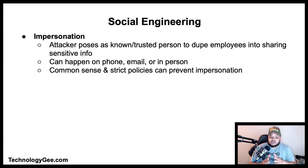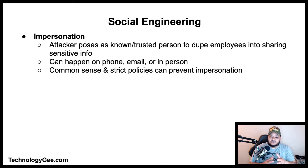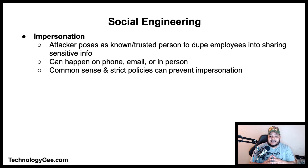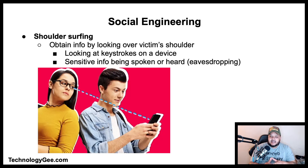Next we have impersonation — a form of fraud in which attackers pose as a known or trusted person to dupe an employee into transferring money to a fraudulent account, or sharing sensitive information such as intellectual property, financial data, payroll information, or revealing login credentials that attackers can use to hack into a company's network. Impersonation can happen on the phone, through email, or in person. Common sense and strict policies on communicating sensitive information can help prevent impersonation attacks.